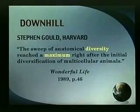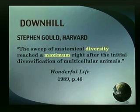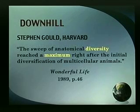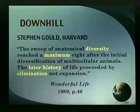So when you see these connected branches, these trees of life, understand — even the leading evolutionists acknowledge this is not what the fossil record says. Gould acknowledges that what you really find in the beginning is this broad, diverse picture, very much like the top of the tree. If you turn it upside down, it would be closer. He says the sweep of anatomical diversity reached a maximum right after the initial diversification. Right at the beginning you have got more diverse kinds than later. The later history of life proceeded by elimination, not expansion — it started broad and went downhill, with more phyla eliminated as you proceeded.